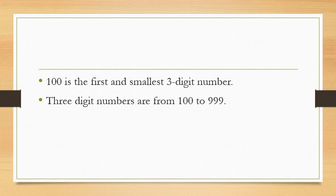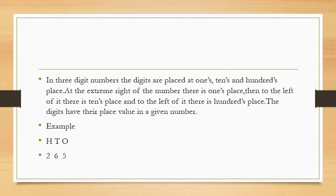Children, 100 is the first and smallest three-digit number. Three-digit numbers are from 100 to 999.